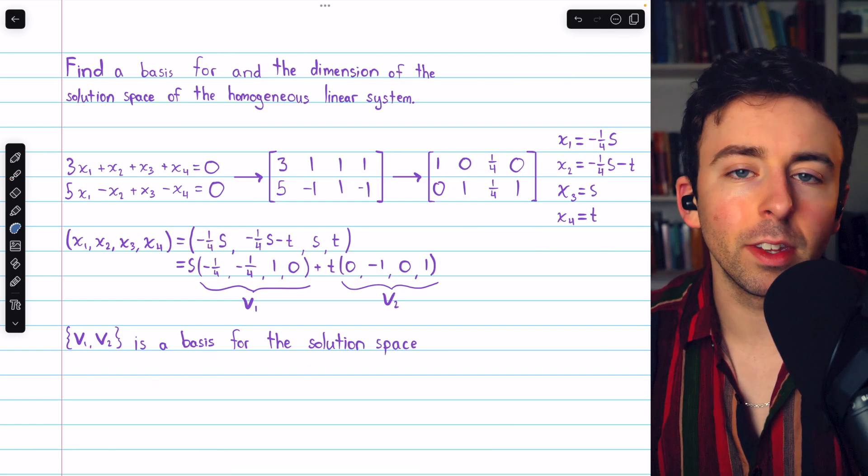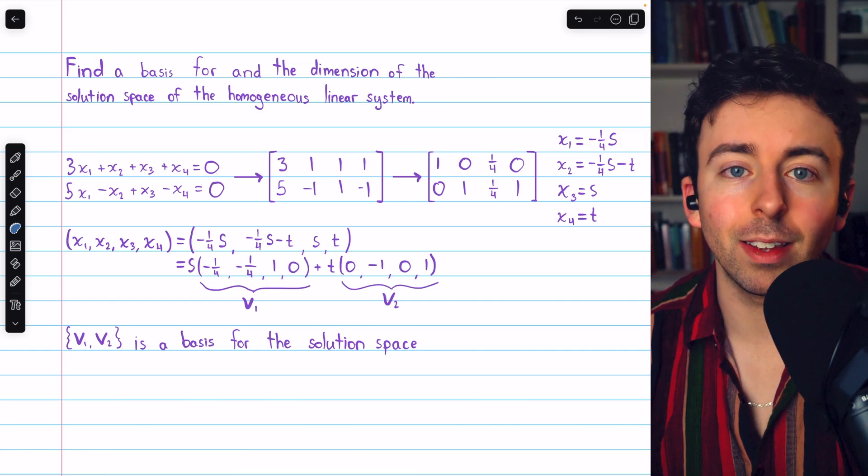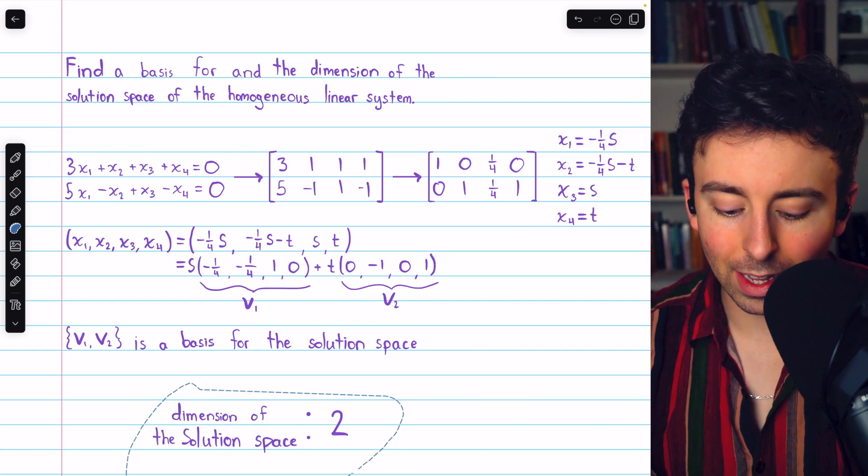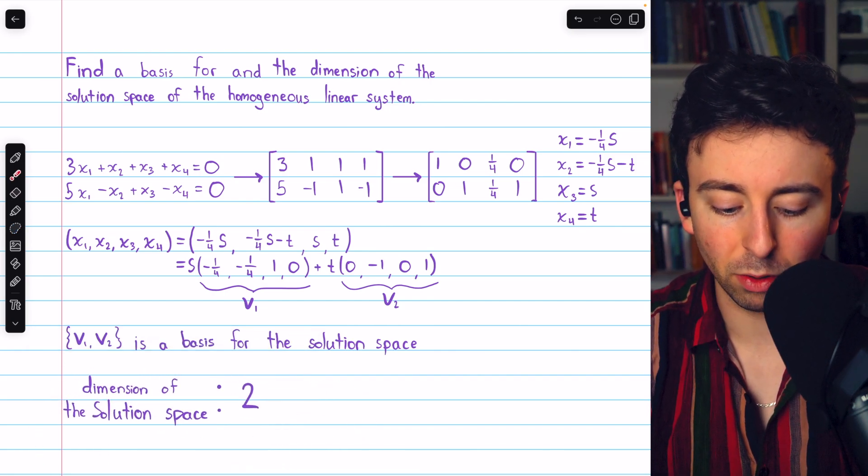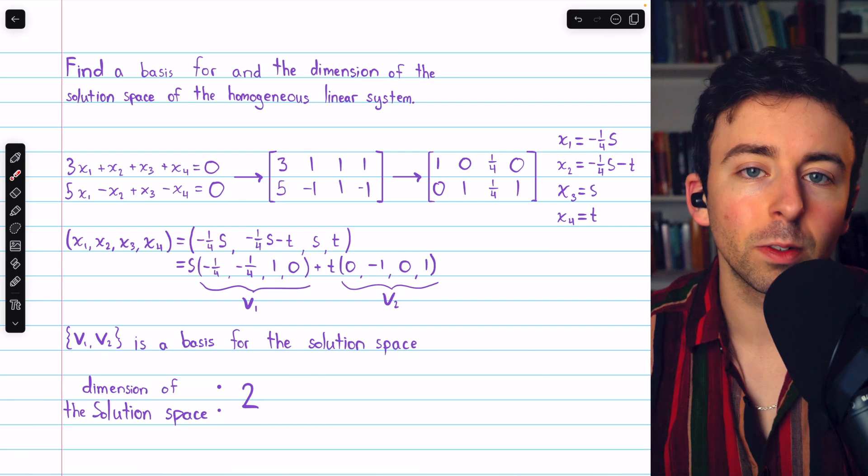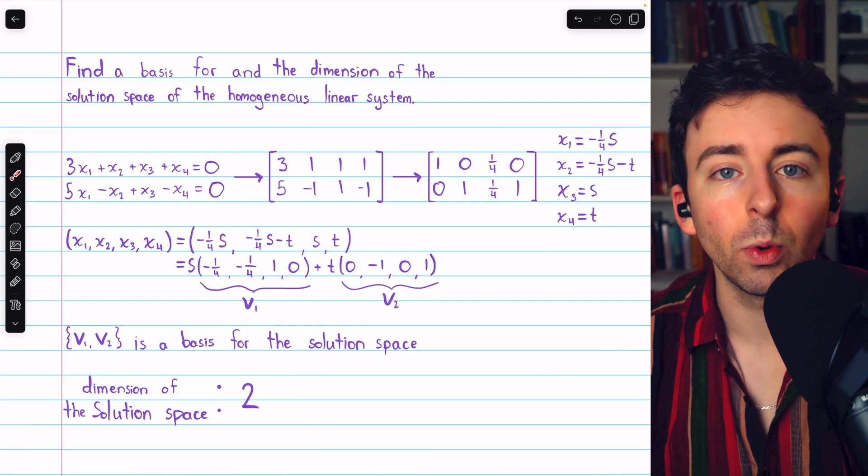Finally, what's the dimension of the solution space? Well, by definition, it's the number of vectors in a basis for the solution space. Hence, the dimension of the solution space is two, because this basis we found has two vectors, and any basis for the solution space necessarily would have two vectors.